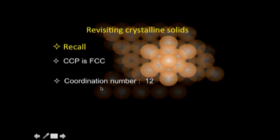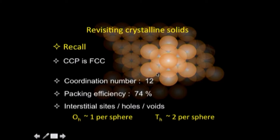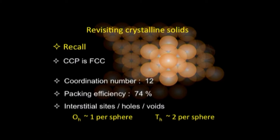The packing efficiency of CCP is about 74%. In such a packing there are interstitial sites called holes or voids: there is about one octahedral void per sphere and two tetrahedral voids per sphere in the FCC/CCP structure. These are characteristic features of CCP that we will use going forward.